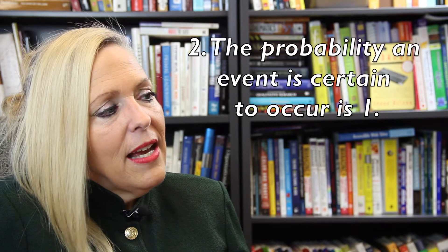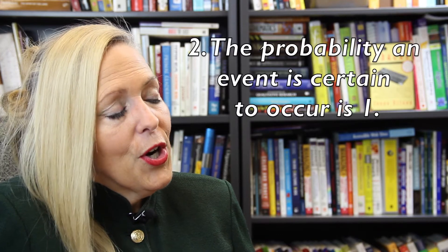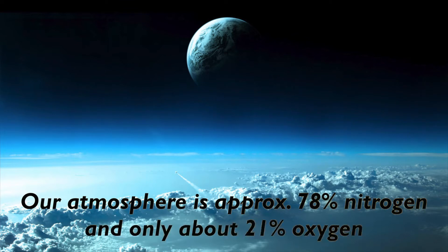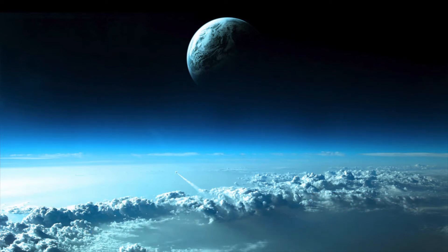Second, the probability an event is certain to occur is 1, or 100%. For example, the probability that nitrogen is in the atmosphere tomorrow is 1. Actually, our atmosphere is approximately 78% nitrogen and only about 21% oxygen.